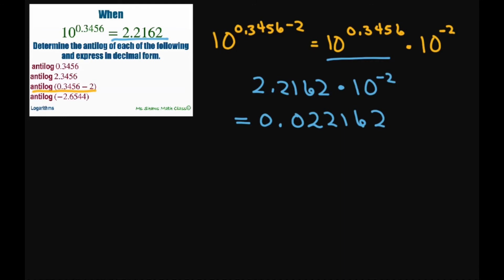And finally, the last one, we have antilog of negative 2.6544. All right, now the problem with this one is it doesn't match up to what we have. So I'm going to rewrite this as the antilog of 0.3456 and minus 2, or minus 3. It had to be minus 3. I went down too much.